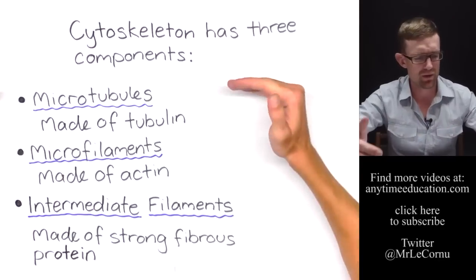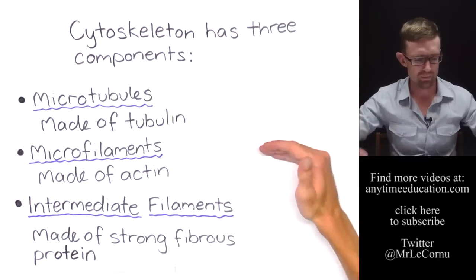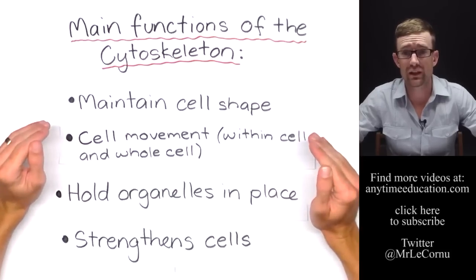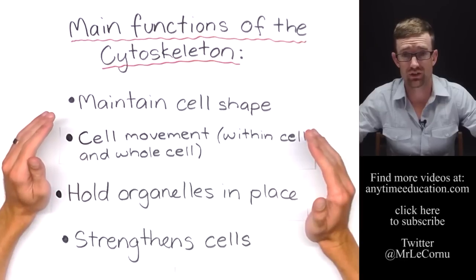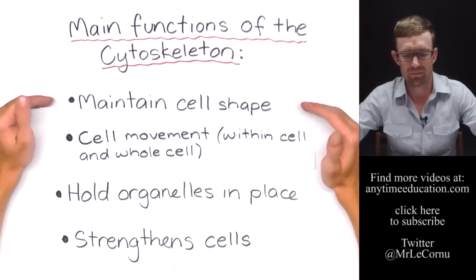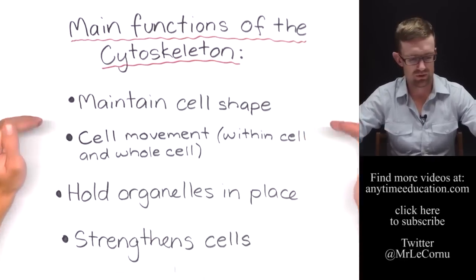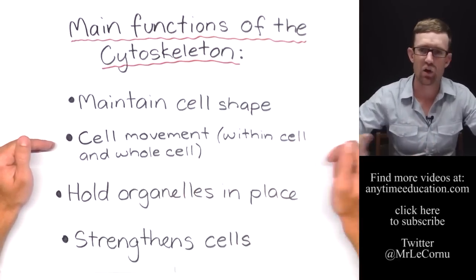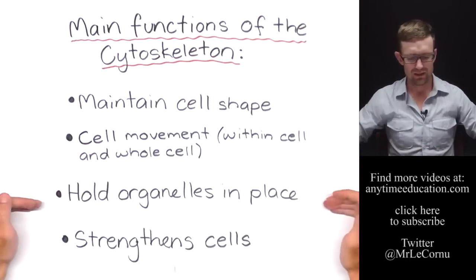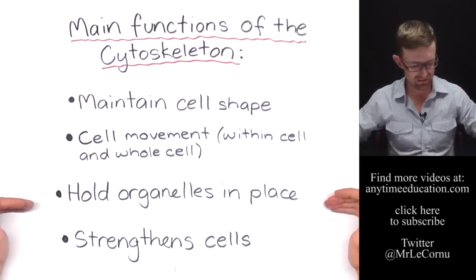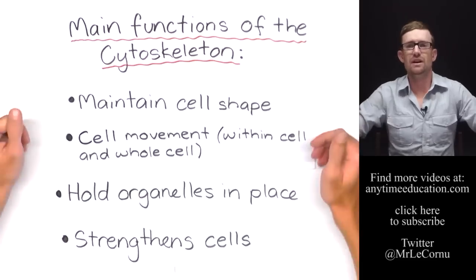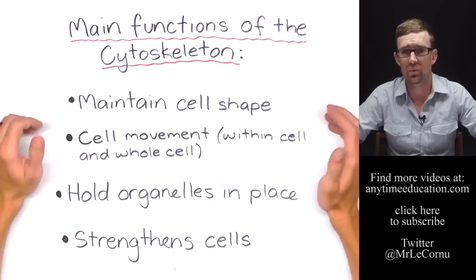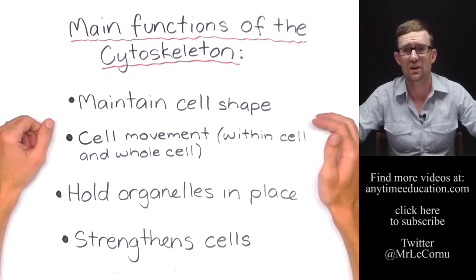Let's just recap them. Microtubules, microfilaments, and intermediate filaments. And let's quickly recap the main functions of the cytoskeleton. It maintains cell shape. It is involved in cell movement, both within the cell and the whole cell itself. It holds organelles in place and it strengthens cells. So guys, that's been the cytoskeleton. I hope you've enjoyed the lesson. I hope it's helped. Thanks very much for watching and we'll see you next time.